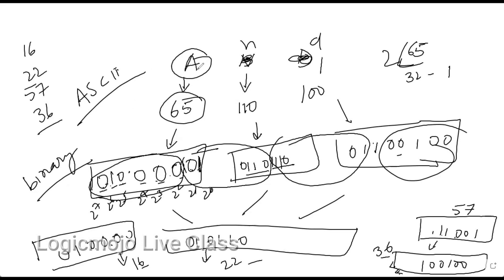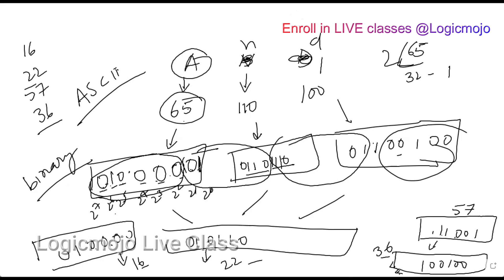We converted from 8-bit to 6-bit groups to enable the Base 64 conversion, since 6 bits represents 64 possible values. We obtained the decimal numbers 16, 22, 57, and 36. Now we need a lookup table. That table maps each number to its corresponding Base 64 character.